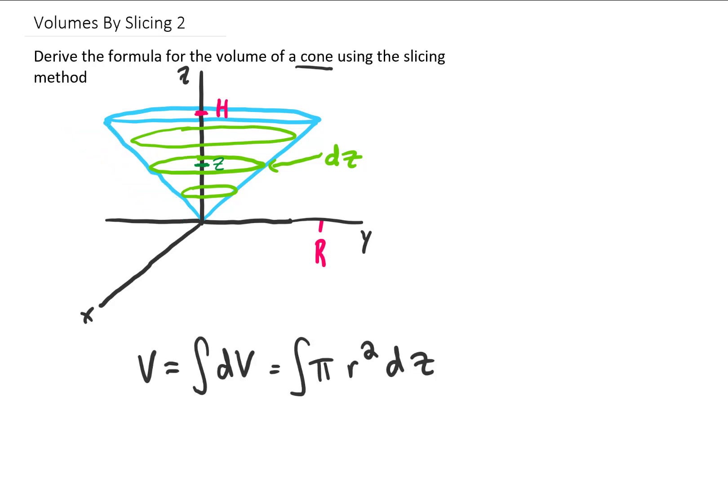In other words, we have a volume that is the integral of πr² dz, where r is the radius of each one of these circles right here, which you can see changes as z changes.